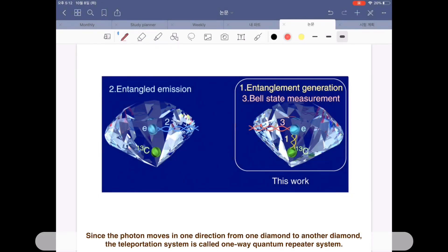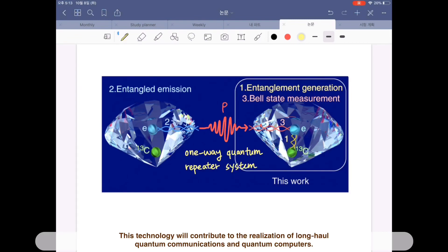establishes the entanglement between two adjacent nodes. Since the photon moves in one direction from one diamond to another diamond, the teleportation system is called one-way quantum repeater system. This technology will contribute to the realization of long-haul quantum communications and distributed quantum computers.